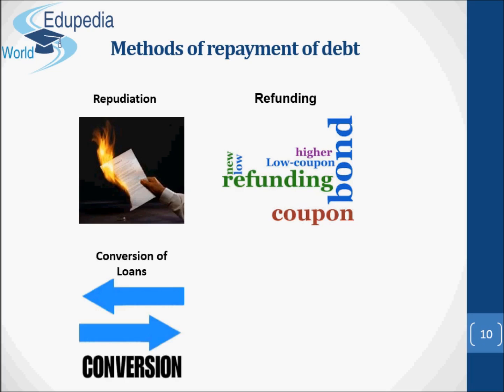Third, conversion of loans. It is a special type of refunding — conversion of existing securities into new securities before maturity. It is generally used to reduce the burden of debt by converting high-interest loans into low-interest loans. According to Professor Dalton, conversion does not reduce the burden of public debt on the state, because reduction in interest rates reduces the ability of creditors to pay taxes, which may mean loss of income to the government, thereby reducing its capacity to repay loans.